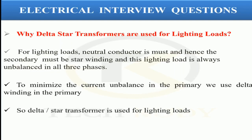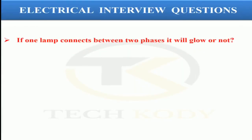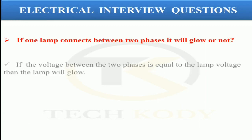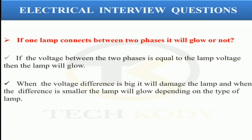The next question is: if one lamp is connected between two phases, will it glow or not? Definitely the lamp will glow. If the voltage between the two phases is equal to the lamp's rated voltage, then the lamp will glow. When the voltage difference is too high, the lamp will be damaged. When the difference is small, whether the lamp glows depends upon the type of lamp.